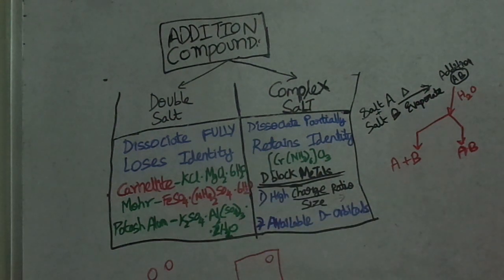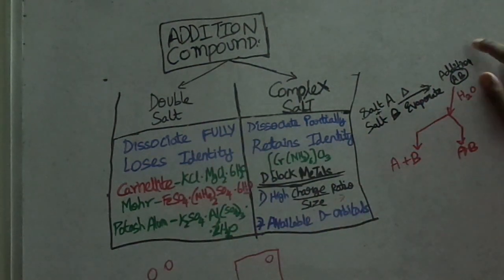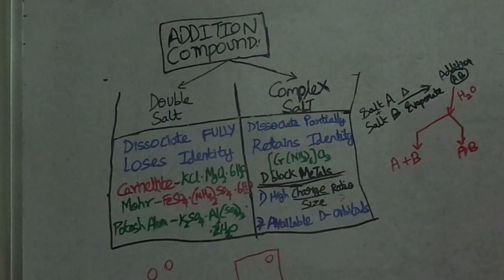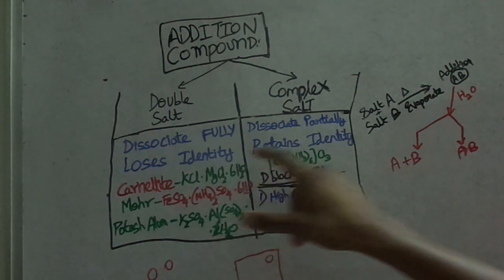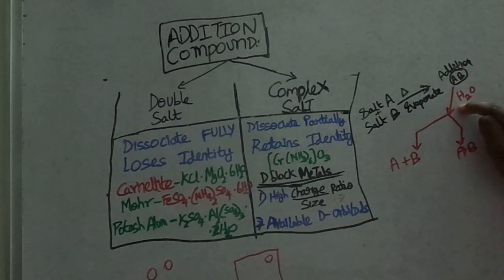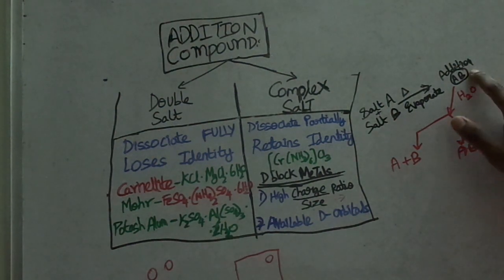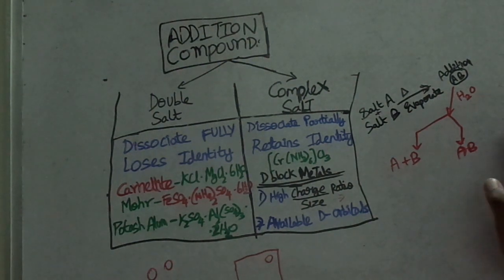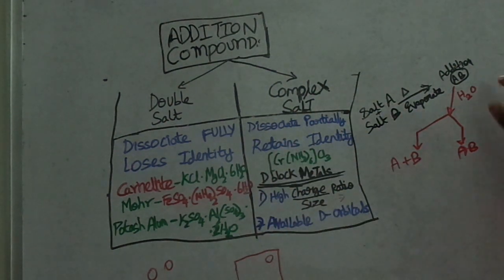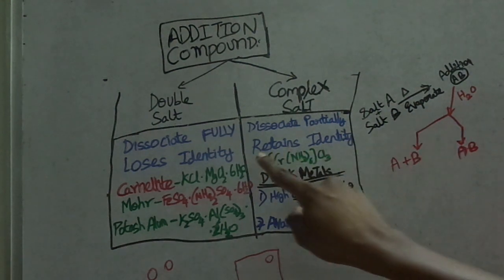Double salt dissociates fully. It loses its identity in solution — if you have addition compound A and B, in solution there is no AB, only A plus B separately, so the identity is lost. But for complex salt, dissociation is only partial — not fully dissociated. AB retains its identity as AB even in solution. So complex salt retains identity, double salt does not.